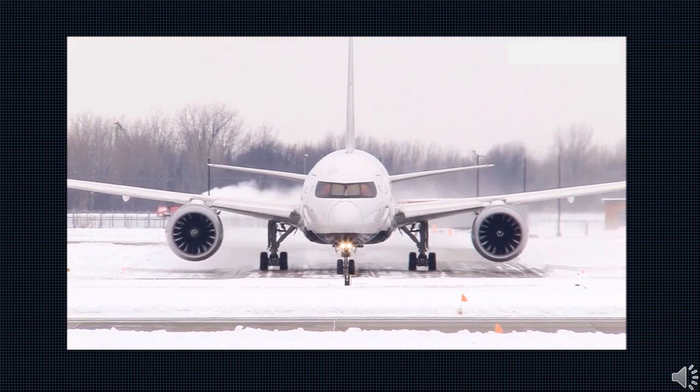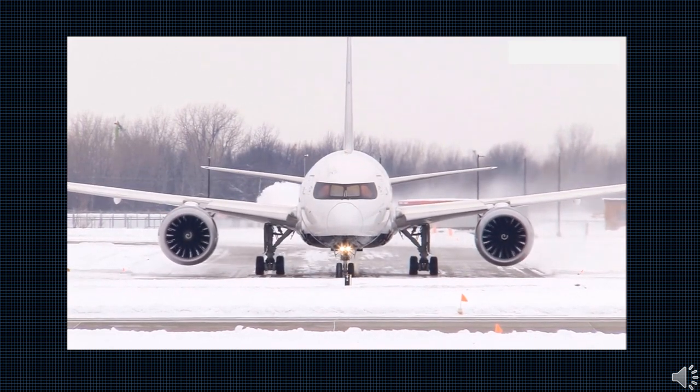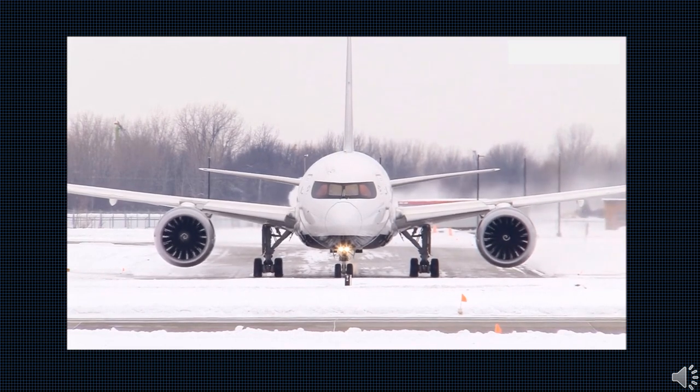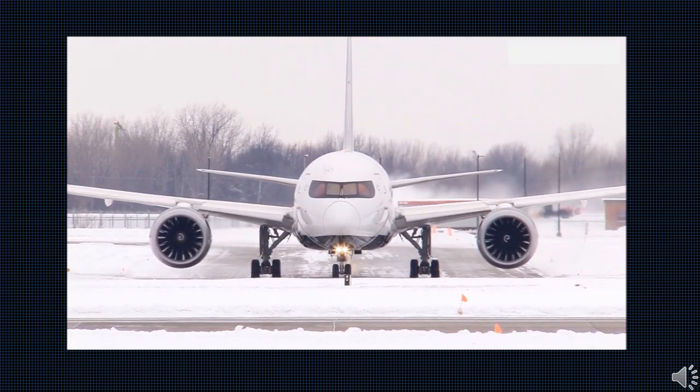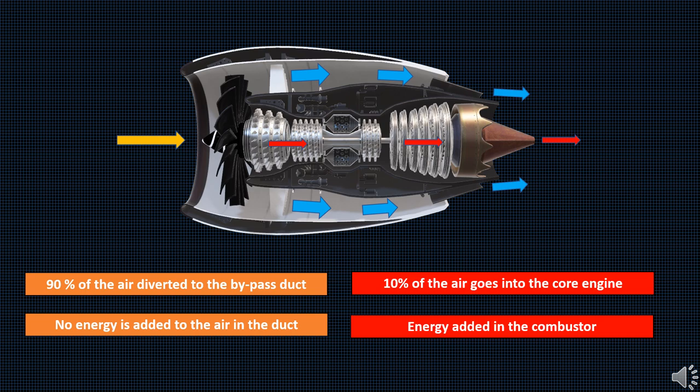Contrary to this, in the turbofan engines the mass flow rate of air is so huge, a smaller increase in velocity of air is enough to produce the same change in momentum. Thus, 90 percent of the air sucked in by the fan is diverted into the bypass duct where no external energy is added to the air.